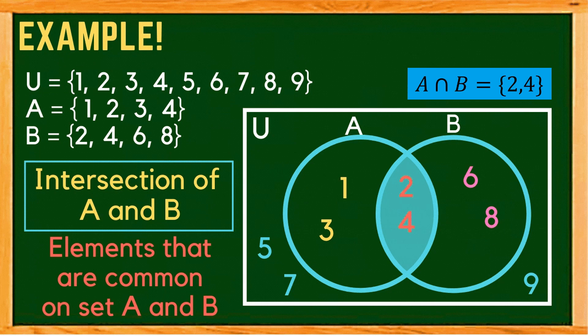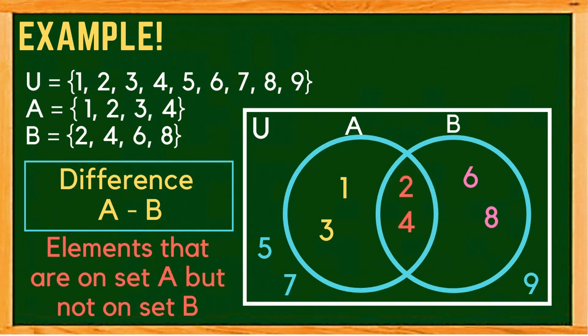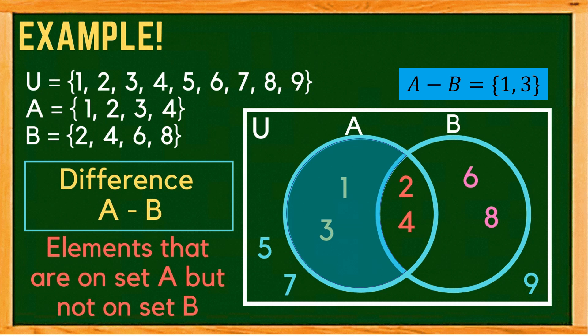Another operation is the difference of A and B, or A minus B. When we say A minus B, these are the elements that are in set A but not in set B. On the Venn diagram, the shaded region represents A minus B, and these are the elements 1 and 3.